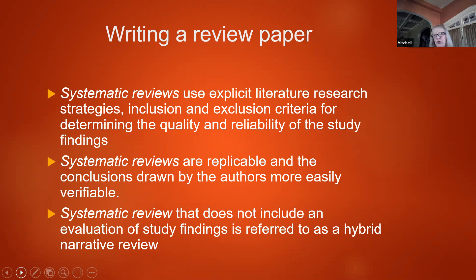A narrative review is essentially a one-time paper — it's not replicable — which shows a key difference from systematic reviews. Systematic reviews use explicit literature research strategies, including inclusion and exclusion criteria for determining the quality and reliability of study findings. These are spelled out so that everybody is able to see them and knows the thinking of the authors behind selection of the articles. Systematic reviews are replicable, and the conclusions drawn by the authors are more easily verifiable. One key point is keeping extensive notes on the papers reviewed and why they were or were not included so that results can be verified and replicated.